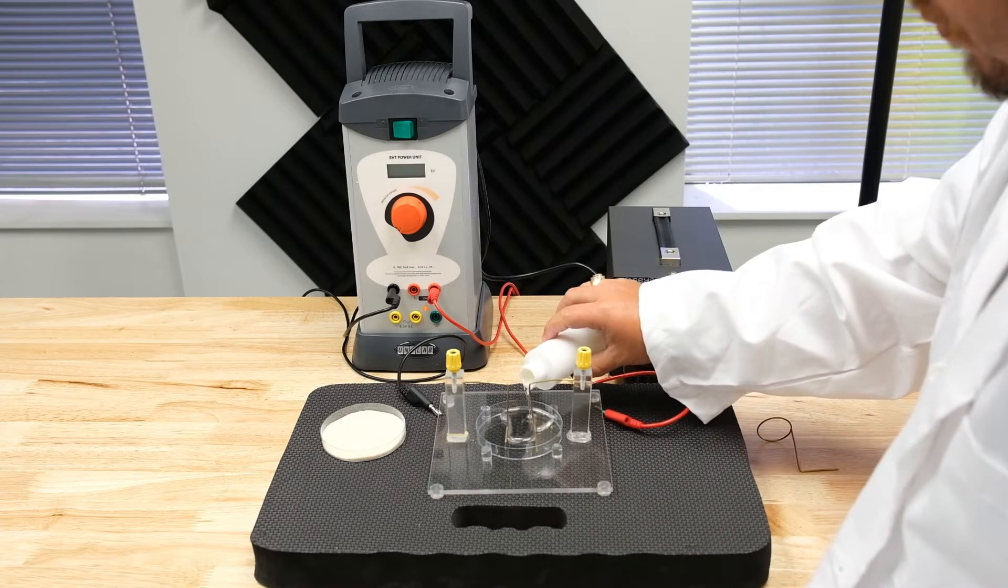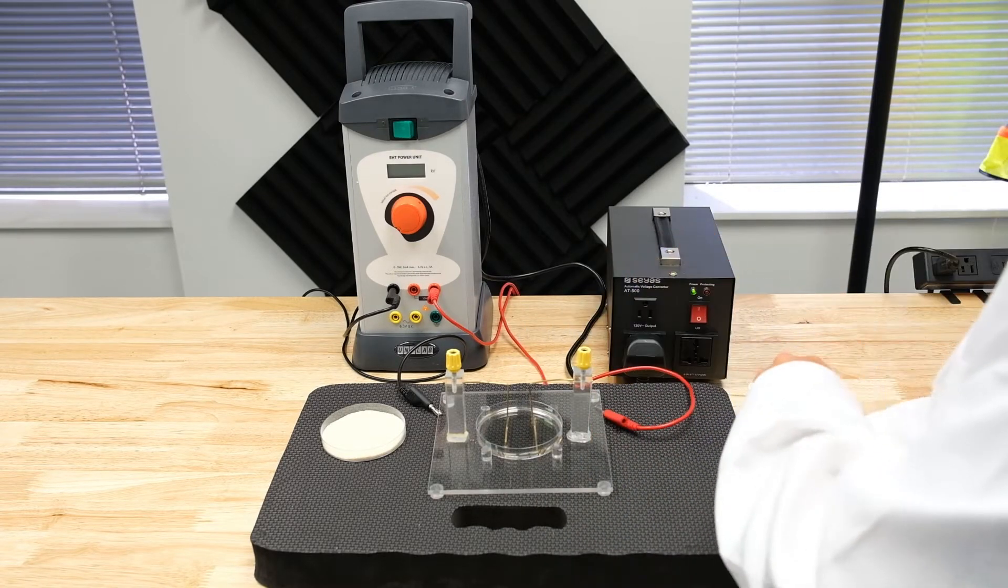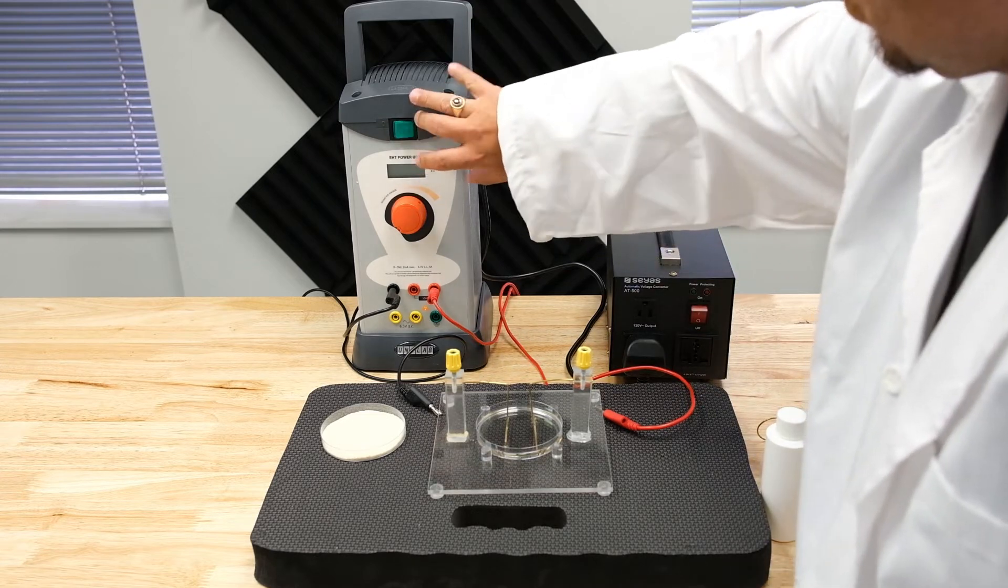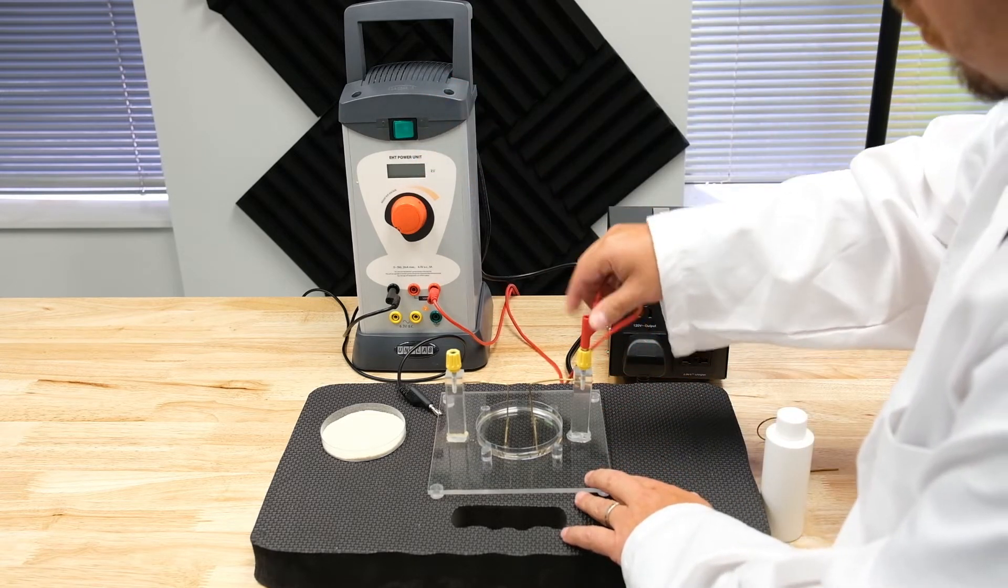Now, we're going to pour the liquid insulator into the Petri dish. For safety reasons, I will disconnect the power supply so that I can safely connect the power cables.